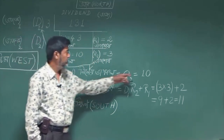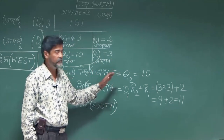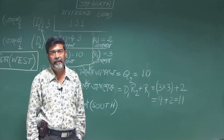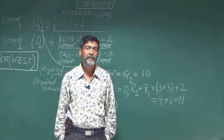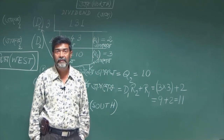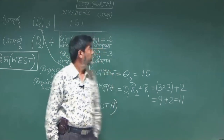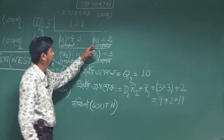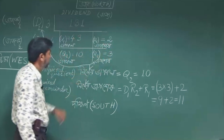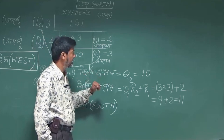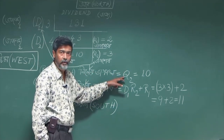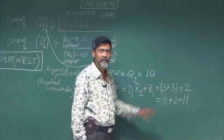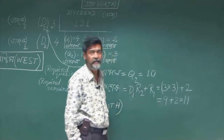The final quotient is q2 and the final remainder is d1·r2 plus r1. We took the number 131 as the dividend and 12 as the divisor, and we factorized 12 into 2 factors, namely 3 and 4. For the division by 3, we have the quotient q1 as 43 and r1 as 2. We then proceeded and the required quotient was 10, which we called q2, and the required remainder was d1·r2 plus r1, giving 11 as the remainder.